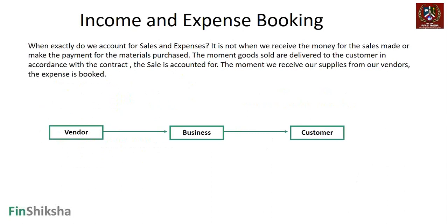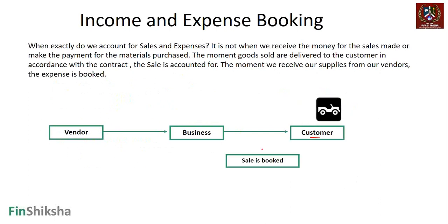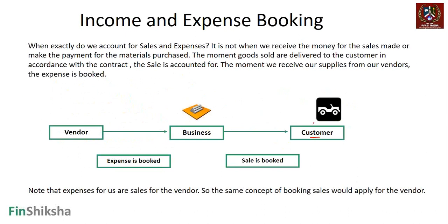We'll quickly recap when exactly do we account for sales and expenses. When a business sells goods to the customer, the expense is booked once ownership has transferred from the vendor to the business, and the sale is booked when ownership has been transferred from the business to the customer. Broadly, it's when ownership gets transferred, but in some cases that may not be so easy to figure out.